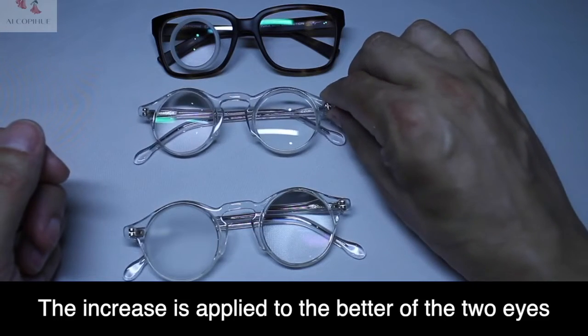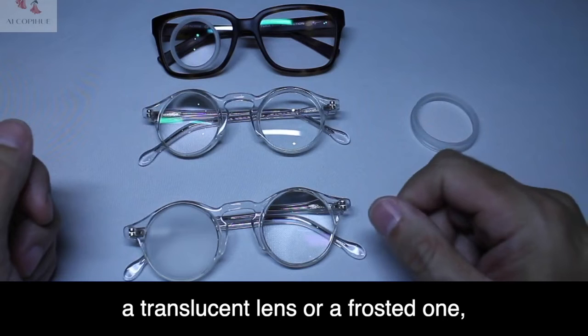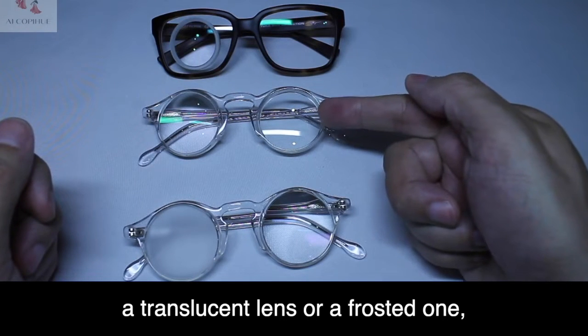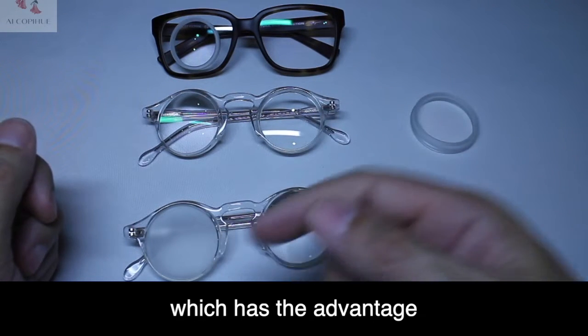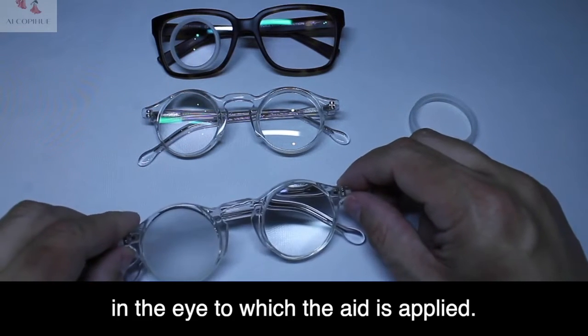The magnification is applied to the better of the two eyes, with the other eye having either a translucent or frosted lens. This has the advantage of allowing the patient's vision to concentrate in the eye to which the aid is applied.